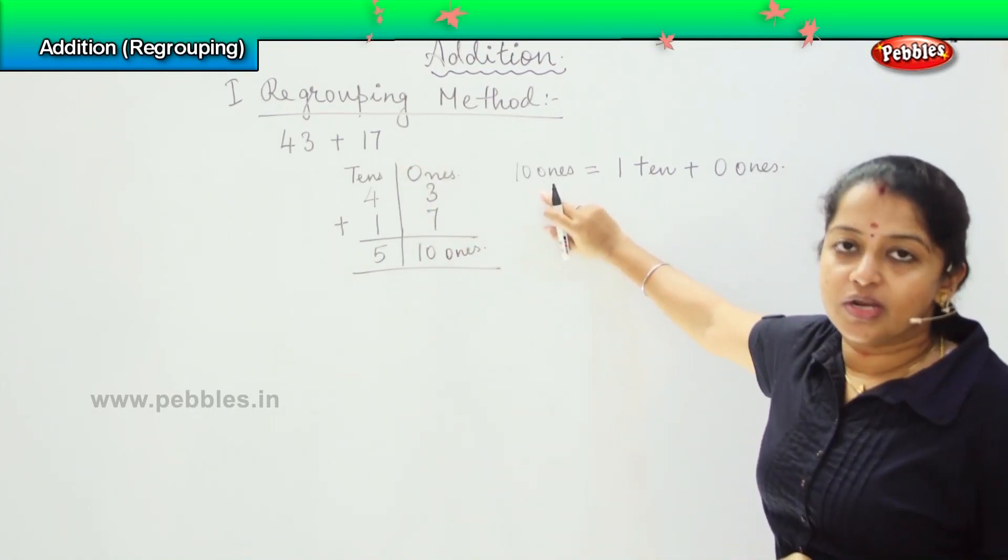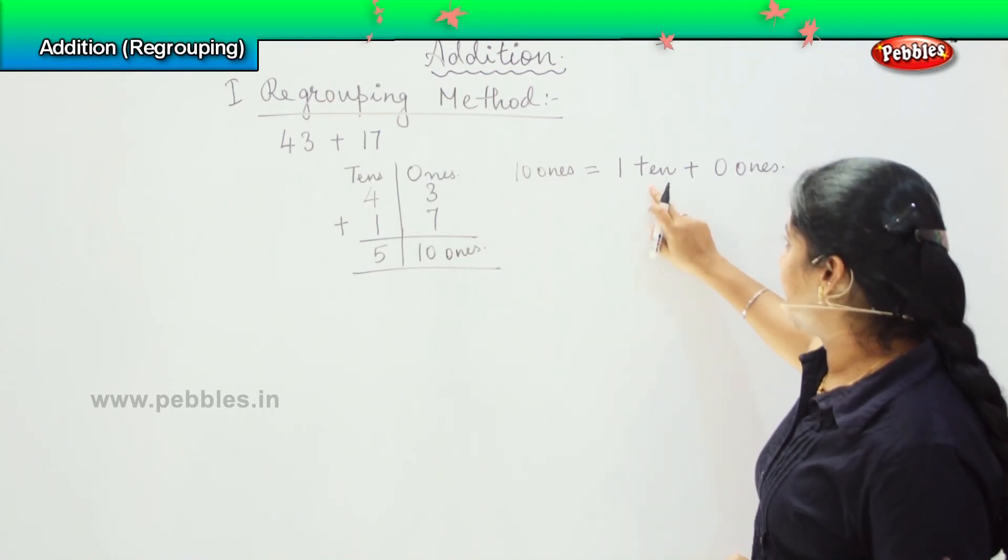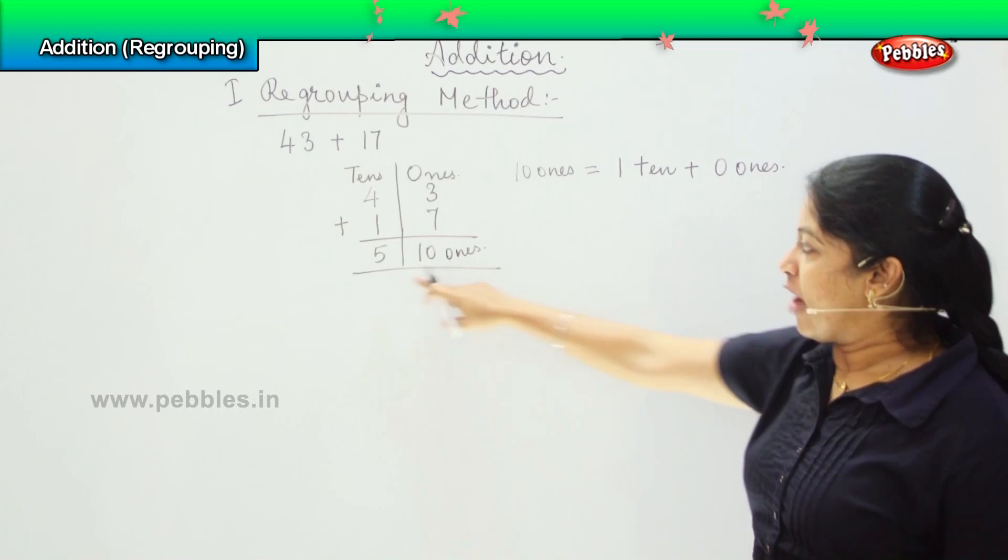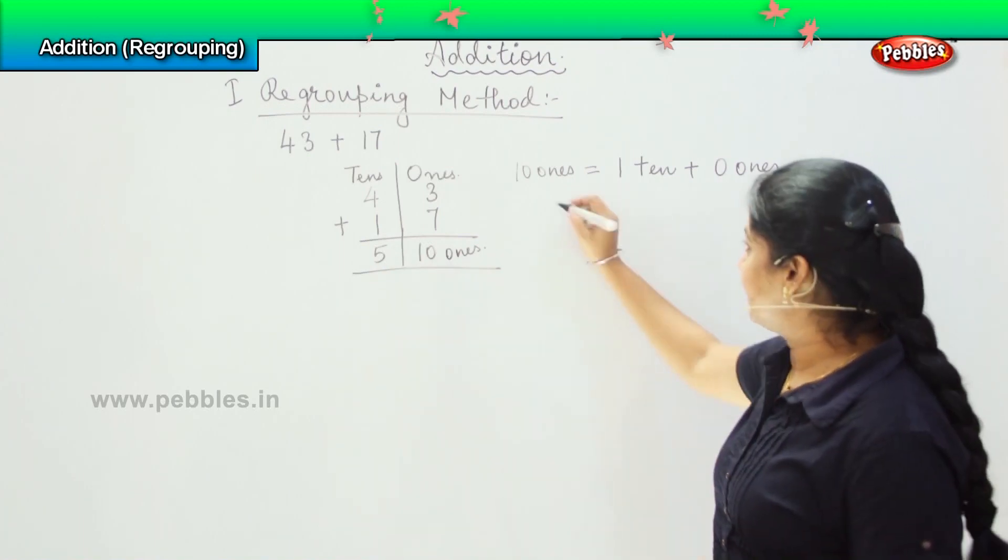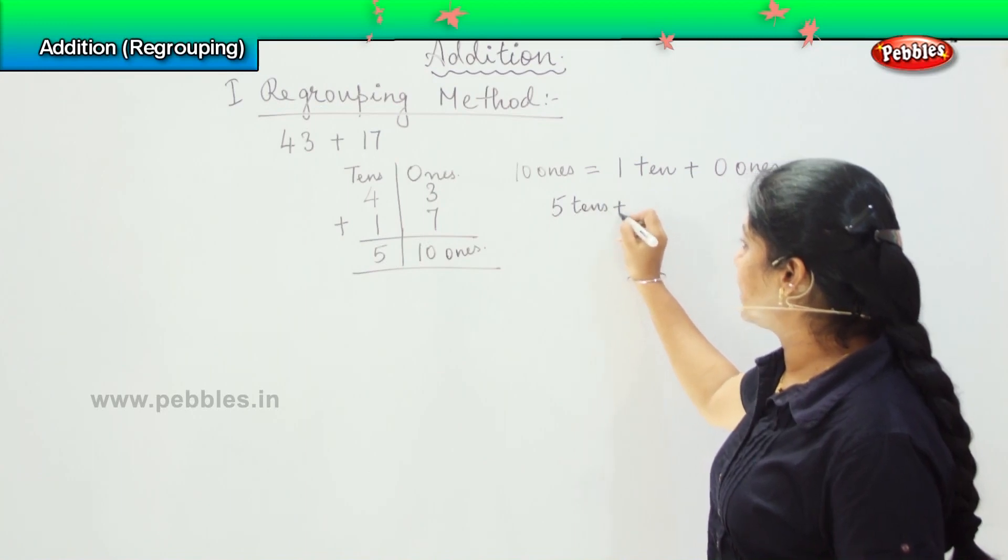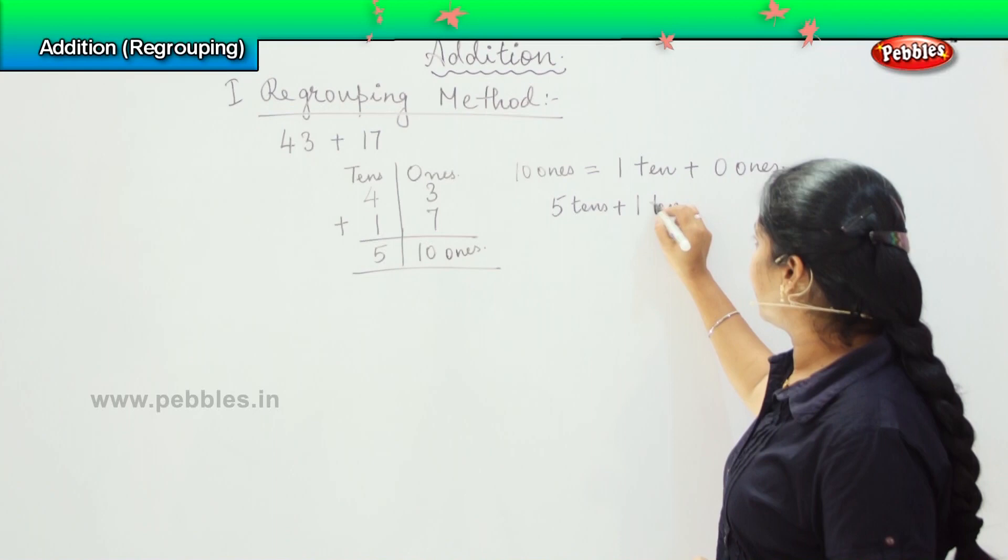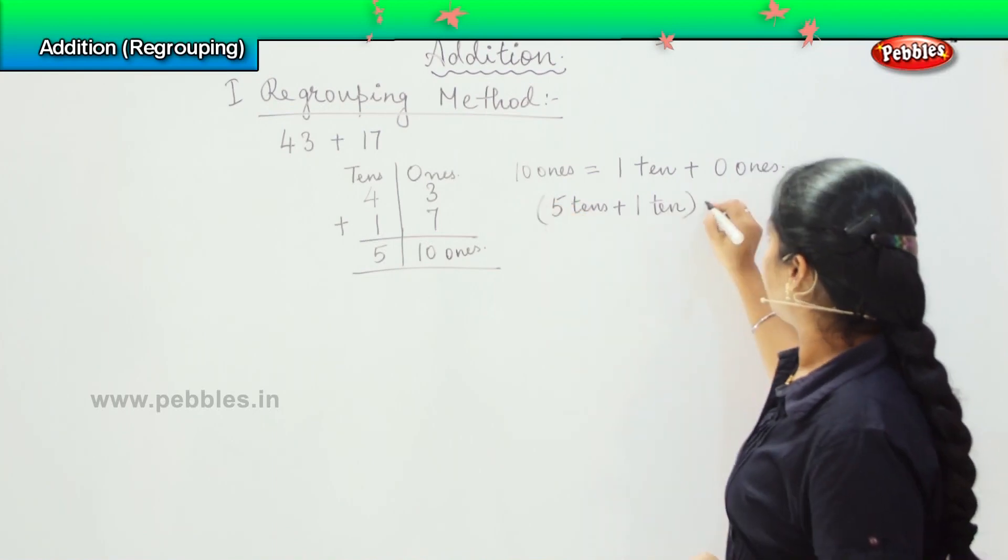So this is called regrouping where I am splitting this 10 ones as 1 ten plus 0 ones. How many tens I have already with me? I have 5 tens plus now this 1 ten will get added, 1 ten plus 0 ones.